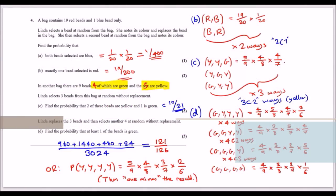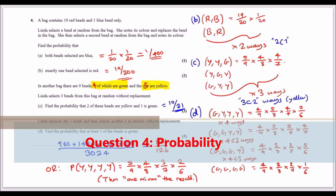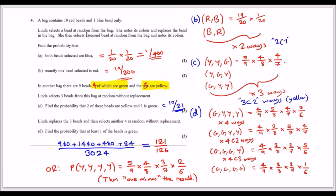Question 4: a bag contains 19 red beads and 1 blue bead (20 total). Linda selects a bead, notes its colour, and replaces it before selecting a second bead. Part a: P(both blue) = (1/20) × (1/20) = 1/400, since the bag is restored to 20 beads after each draw.